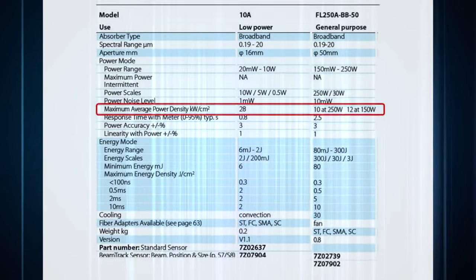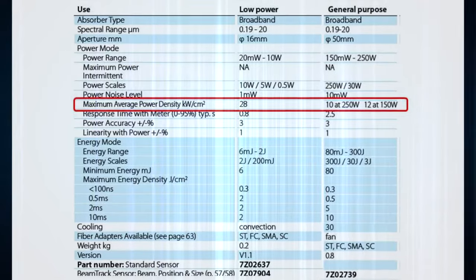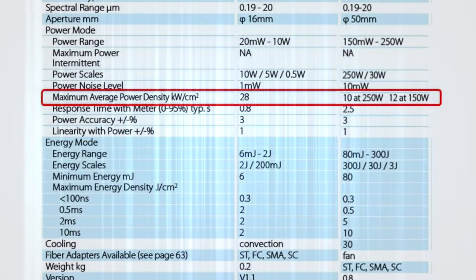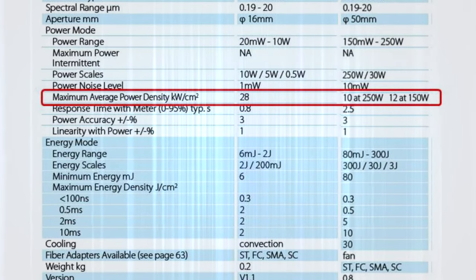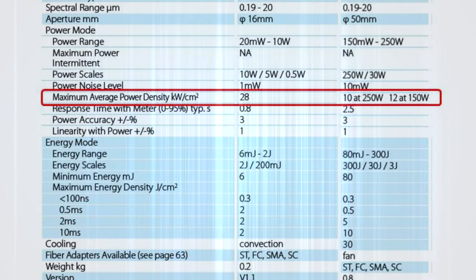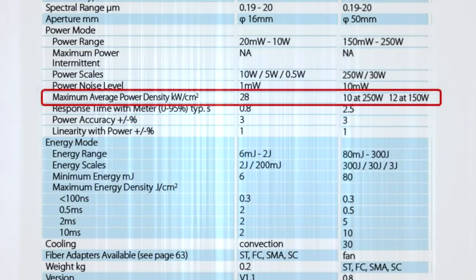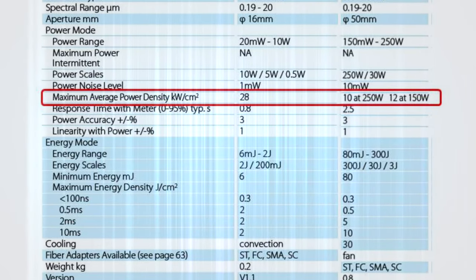the damage threshold of the Ophir broadband coating is specified as 28 kilowatts per square centimeter for the 10A sensor, which measures up to 10 watts, but it's specified as only 10 kilowatts per square centimeter for the FL250A sensor at 250 watts.